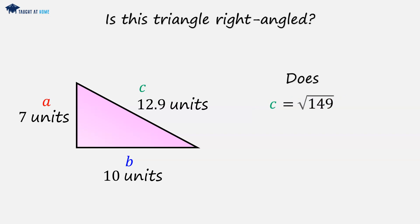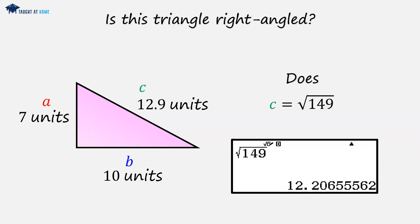So we can take the square root of 149, using a calculator, it comes to 12.206555, rounded, that comes to 12.2 units.